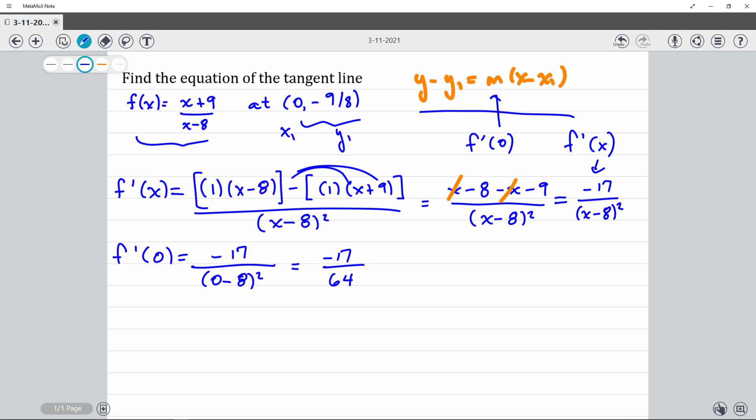All right, here we go. y minus y1, which is negative 9/8. Slope, that's what we just found, negative 17 over 64, times x minus zero. So I get y plus 9/8 equals negative 17 over 64 x. And then finally, my last step is to move negative 17 over 64 x minus 9/8 to the other side.